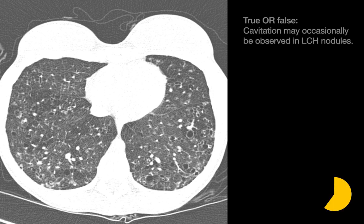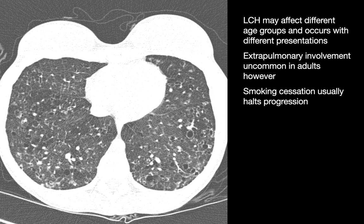True or false? Cavitation may occasionally be observed in LCH nodules. The answer is true. Oftentimes, cavitation is in the center of the nodule with a bagel-like solid component surrounding it — that leads to the description 'Cheerio sign.' LCH can occur in different age groups, with appearances ranging from nodules in early disease to relative absence of nodules in later disease, and cysts becoming much more common in later disease. Extrapulmonary involvement is pretty uncommon in cases of PLCH, and smoking cessation usually should halt progression.